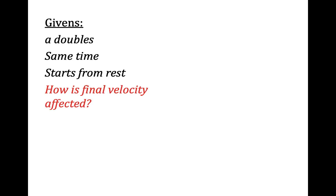We need to identify the givens in order to identify and choose which equation we need to use. So A doubles, same time, it starts from rest. We're trying to find out how is the final velocity affected, and we don't care and we don't need the displacement.